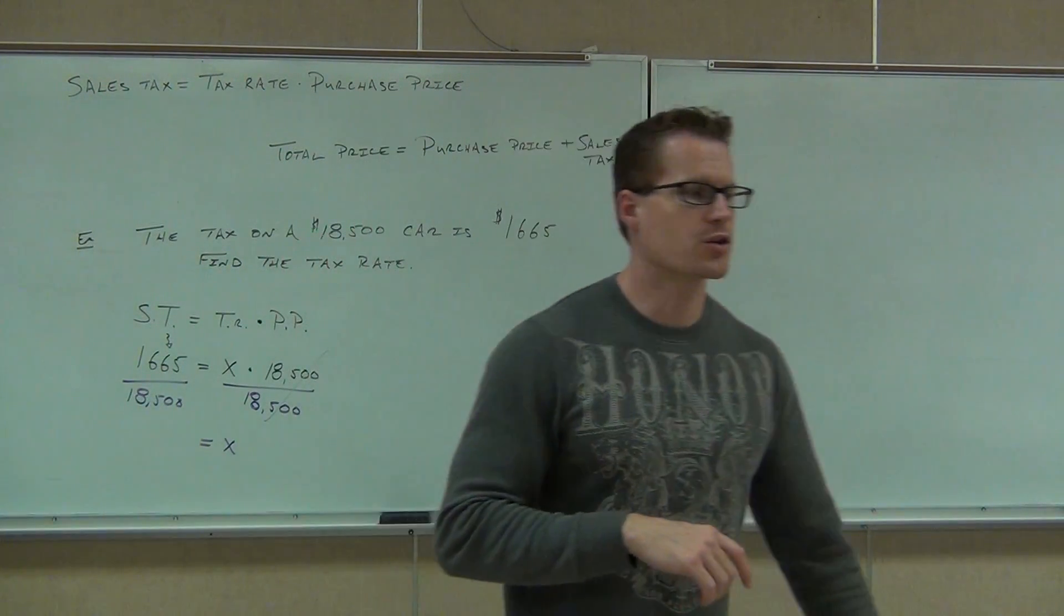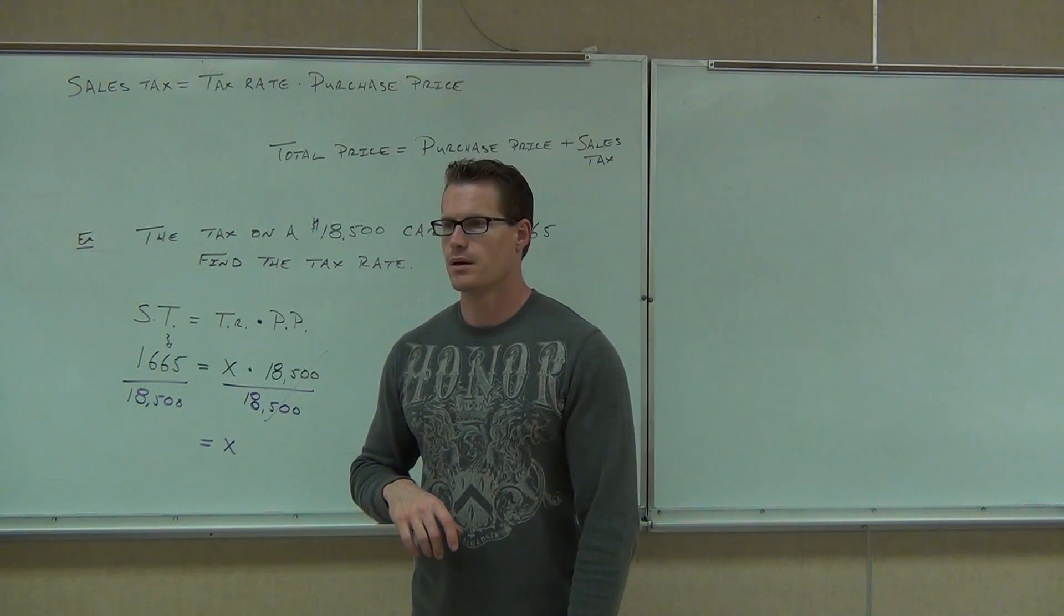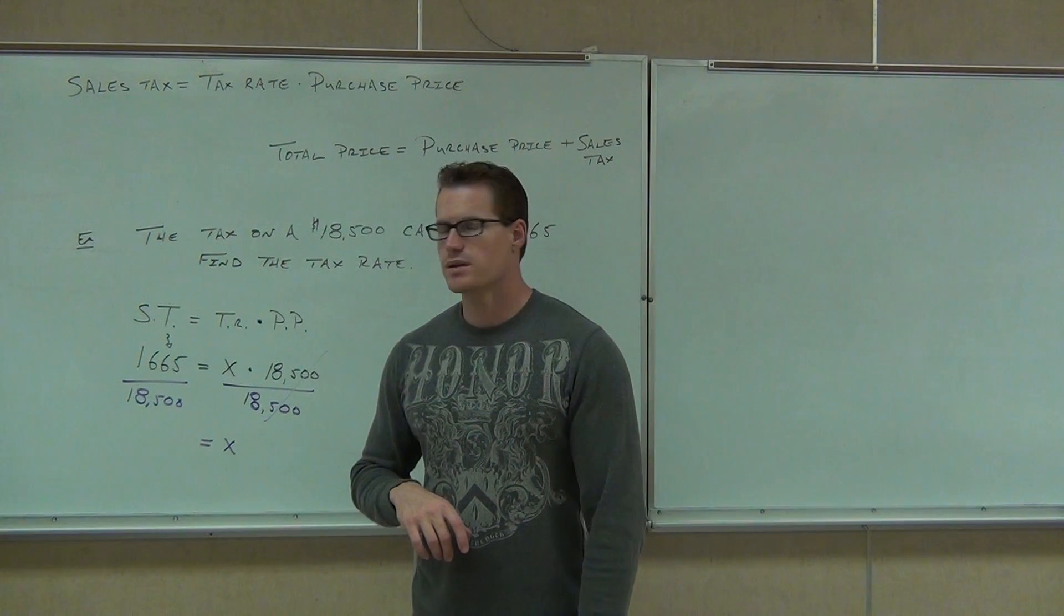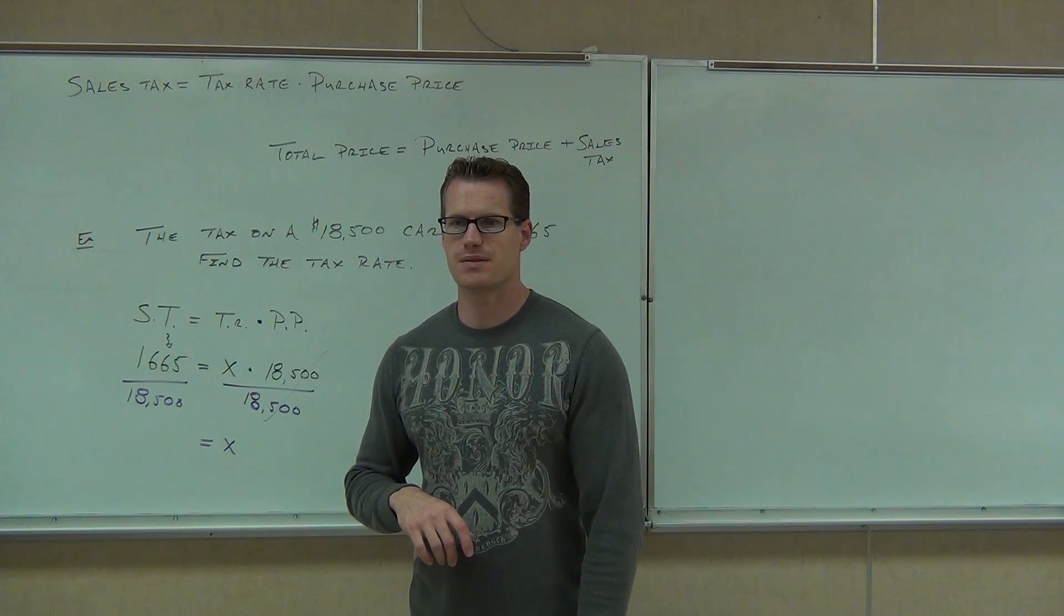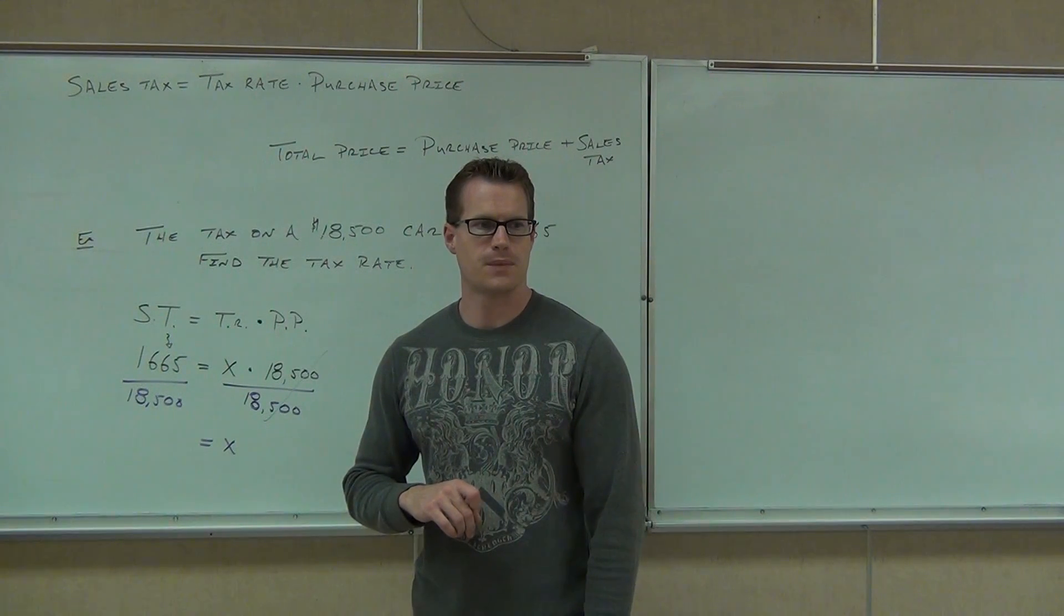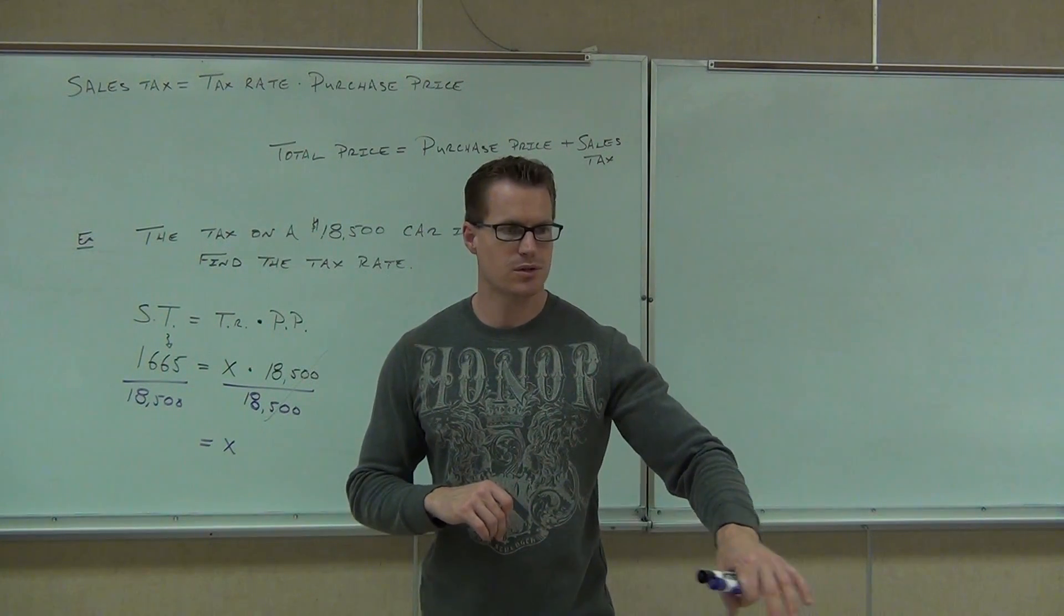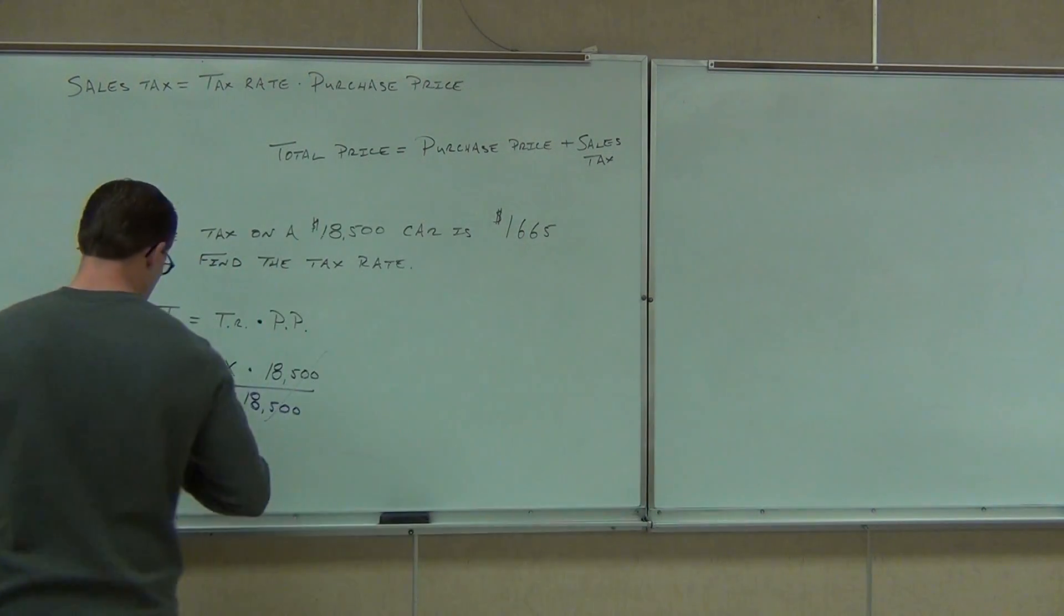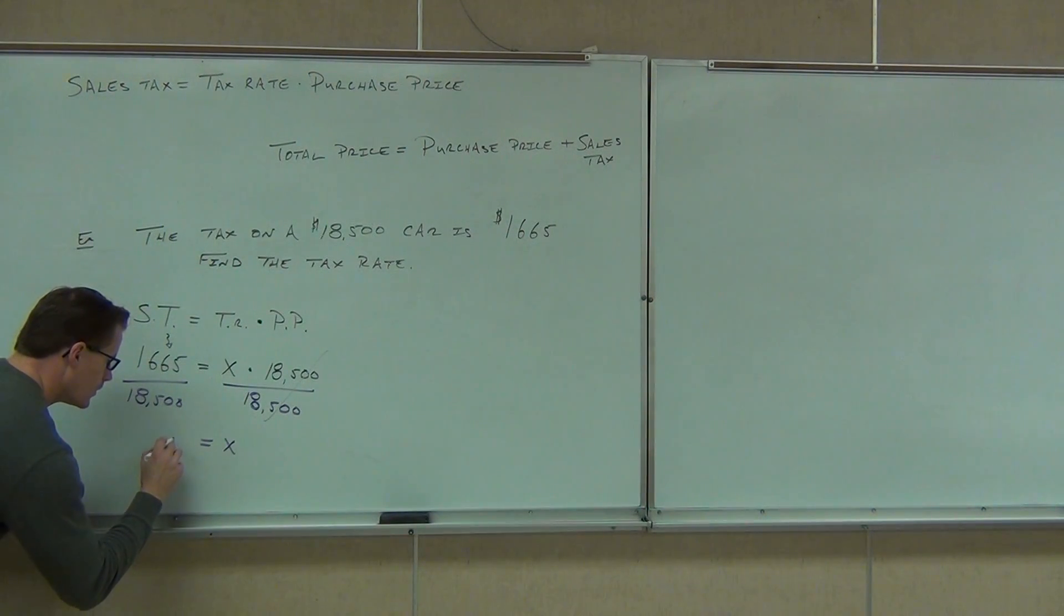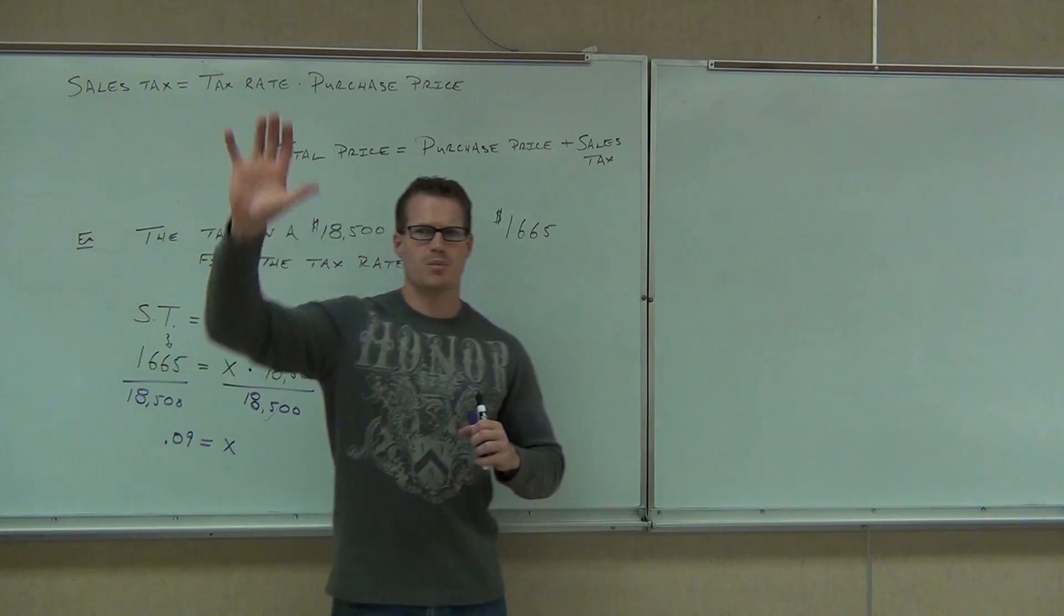What are we going to get on the right-hand side? On the left-hand side, on your calculators, which you should all have, take 1665 divided by $18,500. Say that again? 0.09. No other numbers? No.